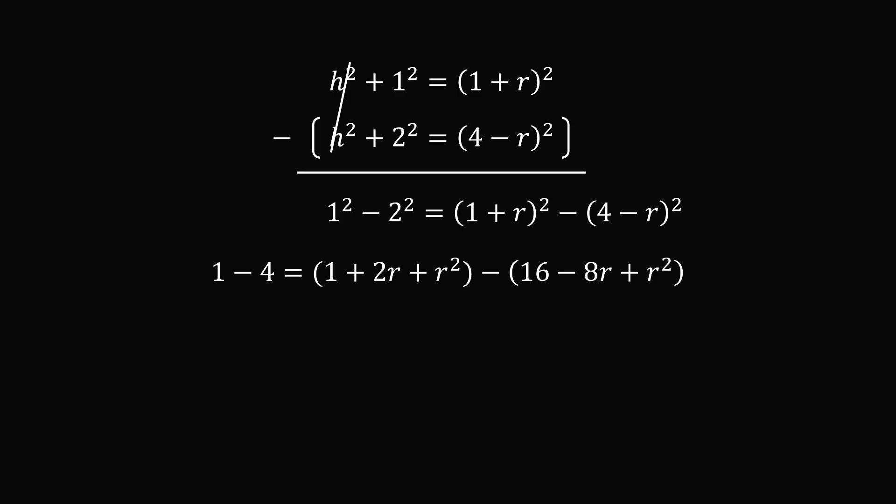Now we do some simplification, and the left hand side is negative 3, and the right hand side is minus 15 plus 10R. We therefore get that R is equal to 1.2 or 6 over 5. And that's the answer!